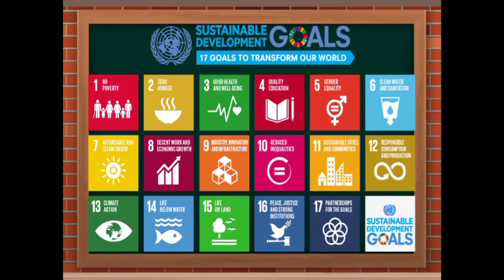Let's take a look at the 17 goals to transform our world by the United Nations. First, no poverty. Second, zero hunger. Third, good health and well-being. Fourth, quality education. Fifth, gender equality. Six, clean water and sanitation. Seven, affordable and clean energy.